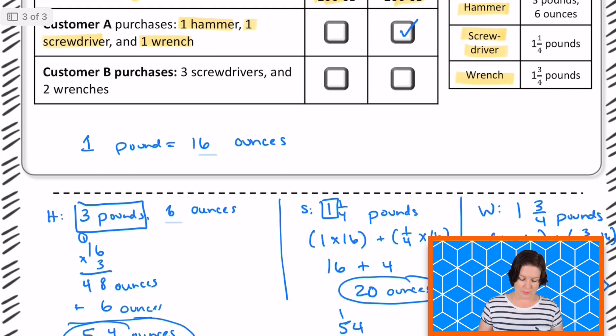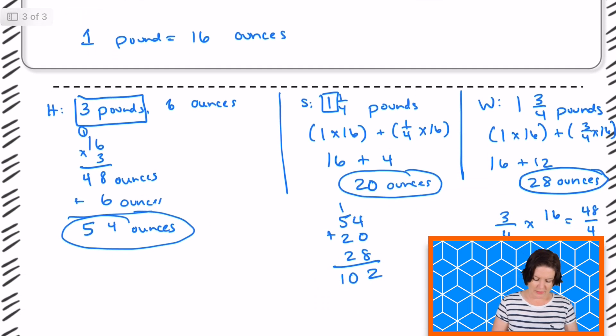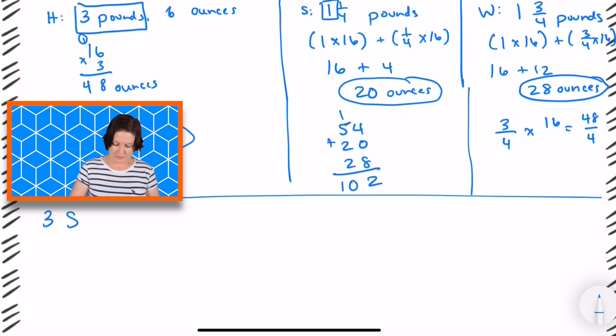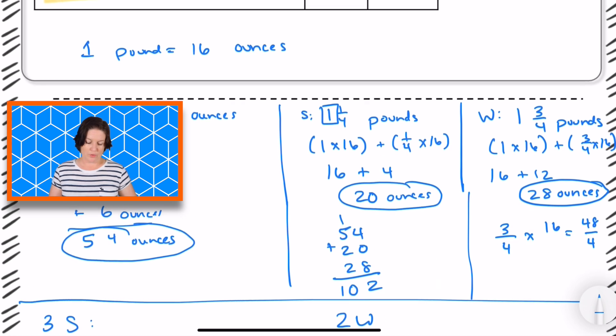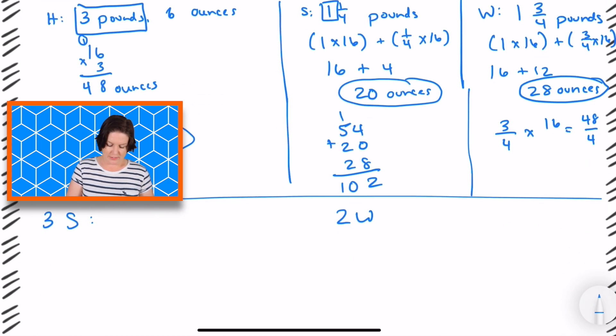Customer B purchases 3 screwdrivers and 2 wrenches. So let's take that over here. We need 3 screwdrivers and 2 wrenches. So we know the weight of one screwdriver is 1 and 1/4. Well, actually, you know what?